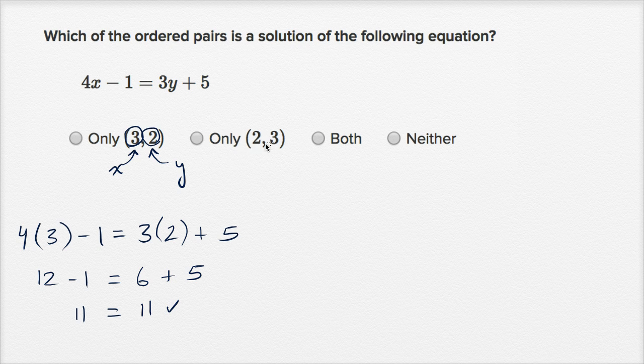Now let's see whether this one does, (2,3). This is saying when x is equal to 2, y would be equal to 3 for this equation. Let's see if that's true. So 4 times x, we're now going to see if when x is 2, y can be 3.